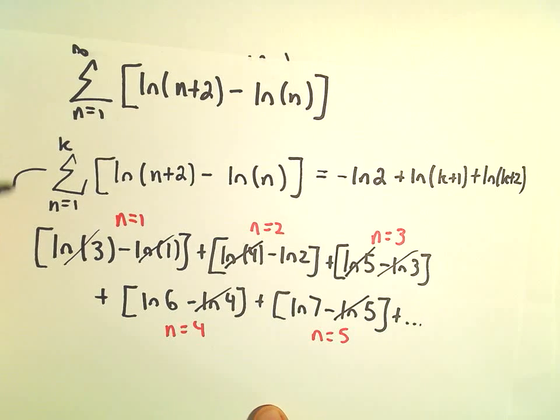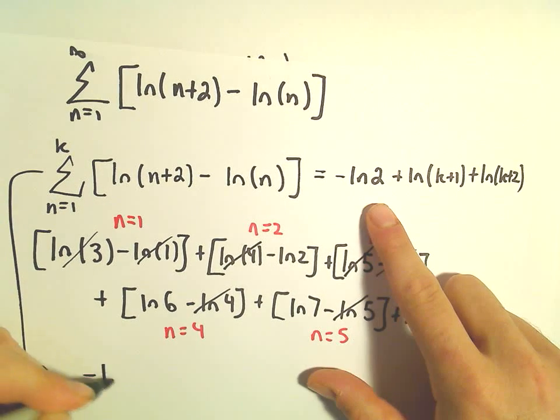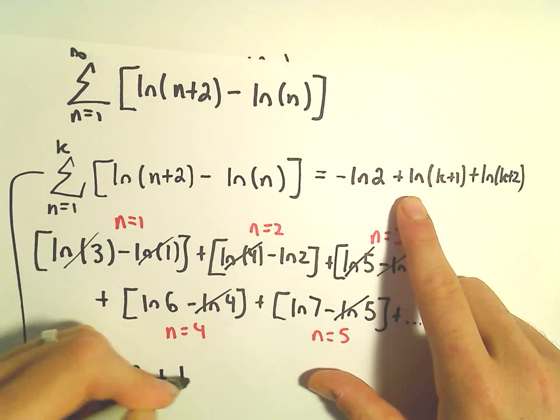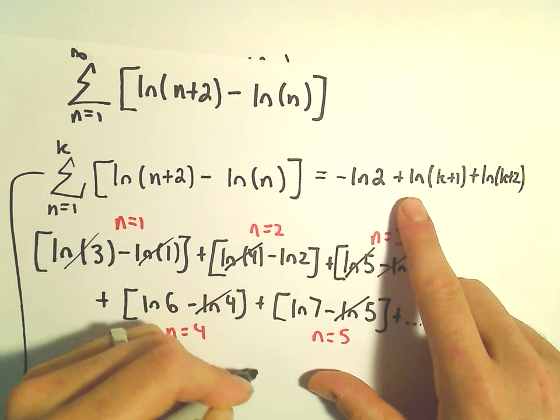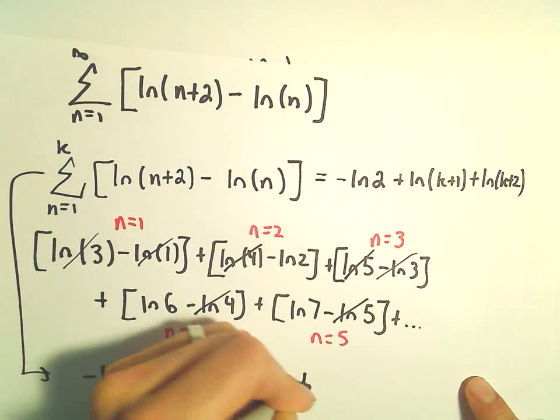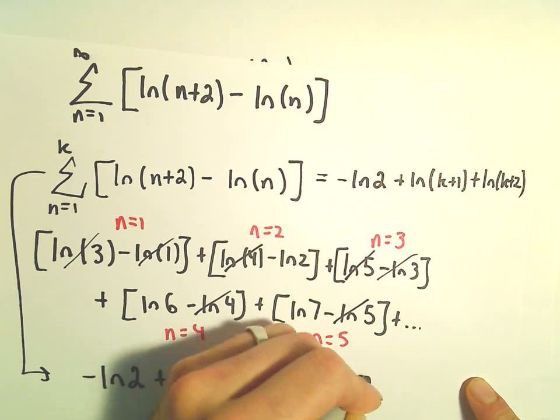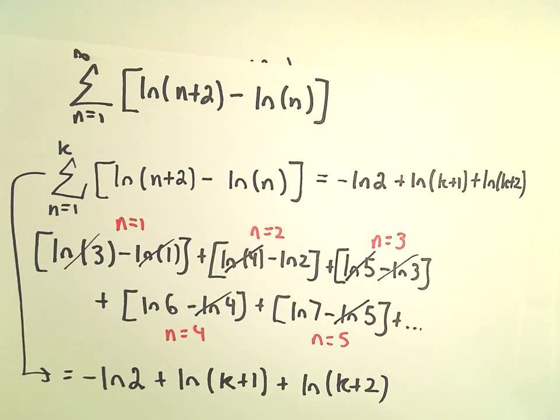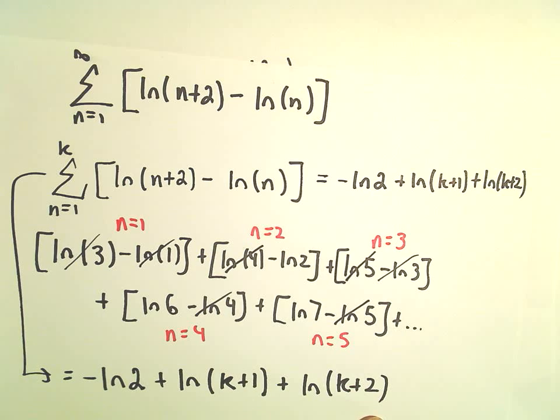So let's write this one more time. Again, we're getting negative ln of 2 plus ln of k plus 1 plus ln of k plus 2. So this looks like what we're going to get for the value of our partial sum.